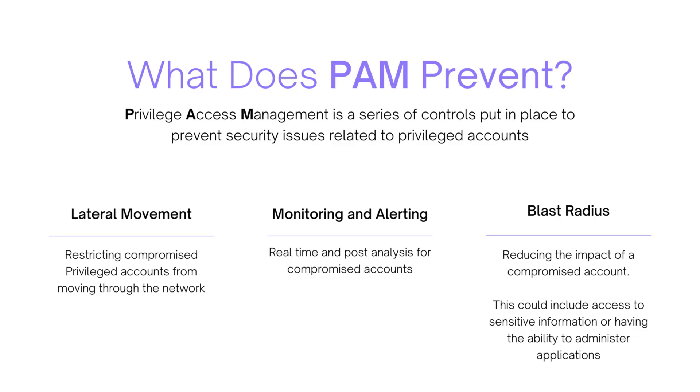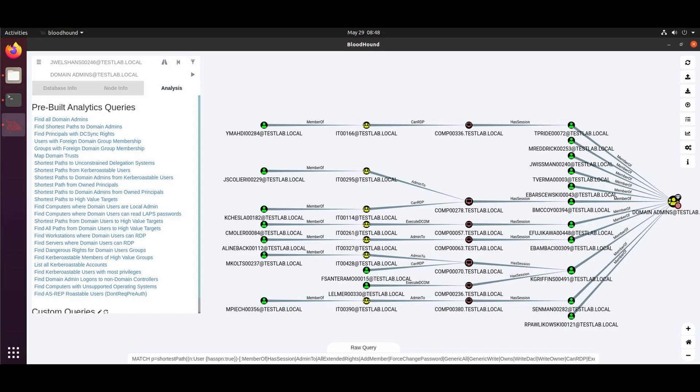So why would you want to implement a PAM system? Implementing a PAM system can stop lateral movement, it can provide monitoring and alerting, and if your account is compromised it also limits the blast radius. When an attacker gets into an organization what they want to do is move laterally around the network and try to get more permissions or move to more important servers within the organization. Limiting that lateral movement is very important. The way you do that with a privileged access management system is implementing a certain degree of limitation to each privileged user so they can't move laterally in the network.